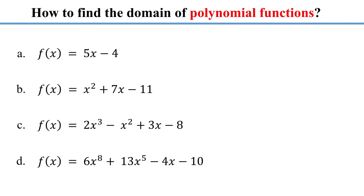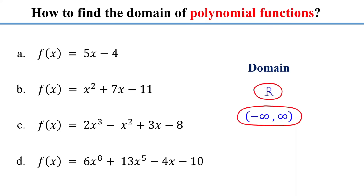Polynomial functions do not have a variable in the denominator or under a square root, so we do not need to worry about dividing by zero or taking the square root of a negative number. Therefore, polynomial functions are defined for all values of x, which means their domain is all real numbers. In interval notation, this is written as negative infinity to positive infinity in parentheses. You can write the domain in either of these ways — they mean the same thing.